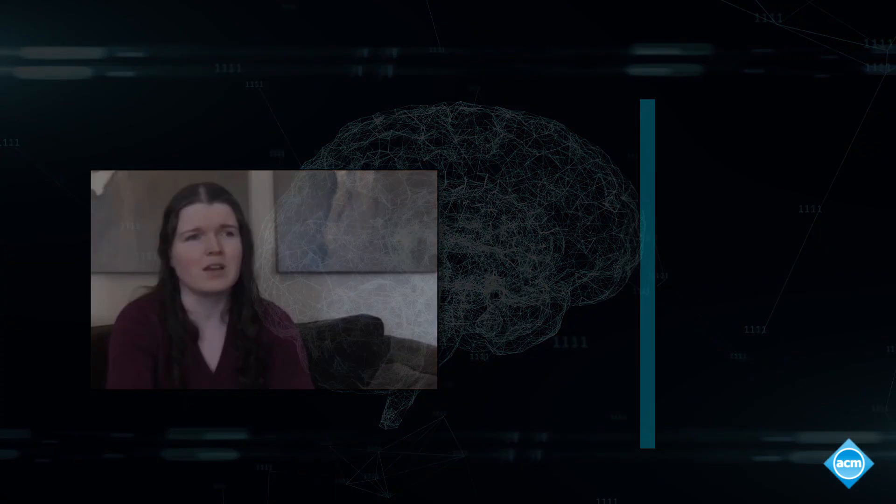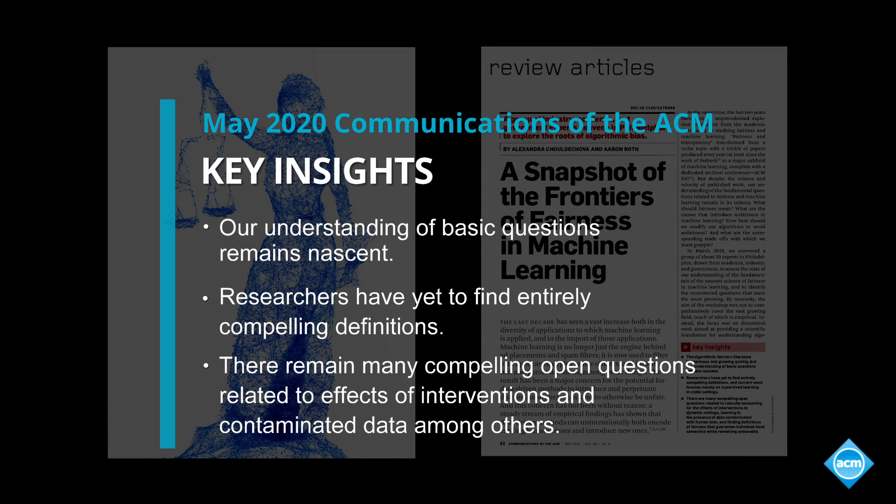The reason we're concerned about discrimination in many cases is that we have a pattern of historical discrimination, and that historical discrimination or bias is reflected in the data. By the time we get to a place in our society where we're generating human decisions and data that isn't contaminated by bias, we probably won't be as concerned about algorithmic forms of discrimination either.